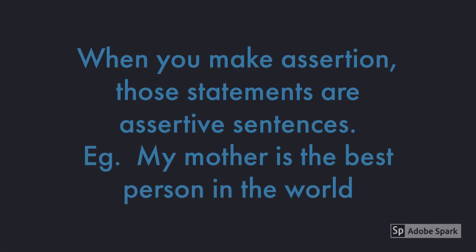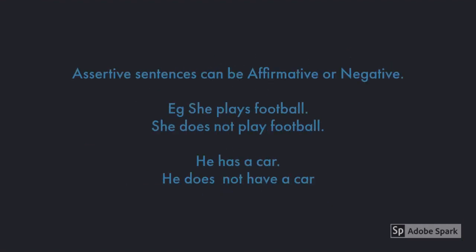When we make assertions or statements, they are called assertive sentences. Assertive sentences can be affirmative or negative. We use words like not, never, no to make negative meanings of affirmative sentences. We also use helping words do, does, did to change into negative.